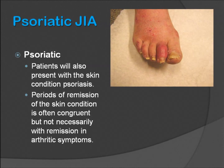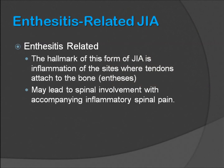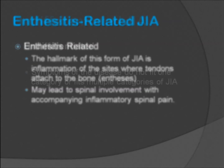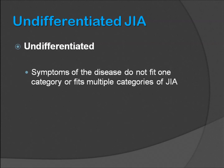In slide 11, you will see a case of JIA associated with psoriasis. The picture on the upper right side of the slide shows typical features involving swelling of the joints and nail findings seen in psoriasis. Interestingly, periods of remission of the skin condition are often associated with remission of arthritic symptoms. In enthesitis-related JIA, the hallmark is inflammation of the sites where tendons attach to the bone, which may lead to spinal involvement with inflammatory spinal pain. Slide 13 demonstrates the undifferentiated form of JIA, where symptoms do not fit one category or fit multiple categories. As you can see from these different forms, JIA can be a very variable disease process based on the presentation.